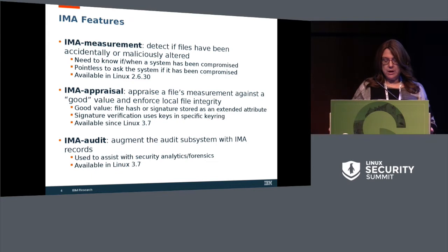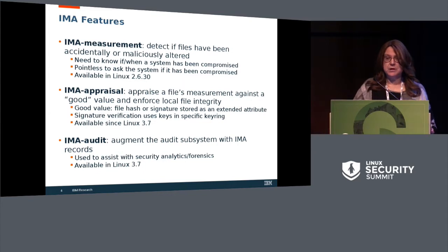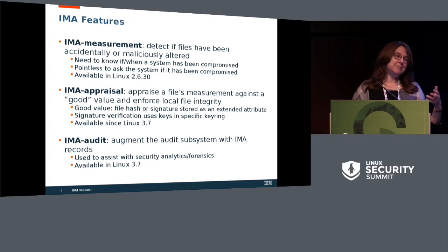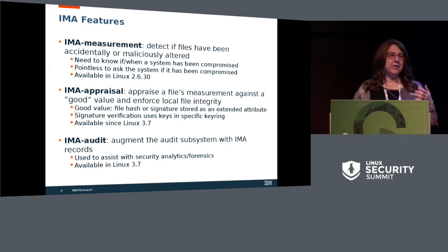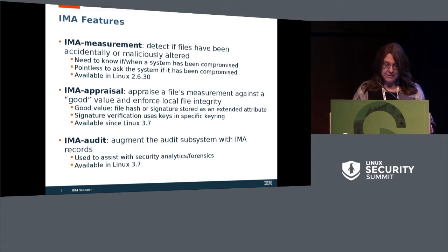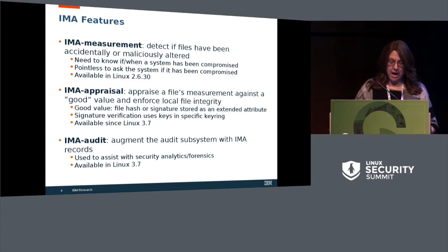The goal of detecting if files have been accidentally or maliciously altered correlates to the first time of measurement. It's pointless to ask the system if the system has been compromised — if it's been compromised, it can lie to you. So we need a method without asking the system if it's been compromised. The second and third goals — appraising a file's measurement against a good value and enforcing local file integrity — correlate to IMA appraisal.